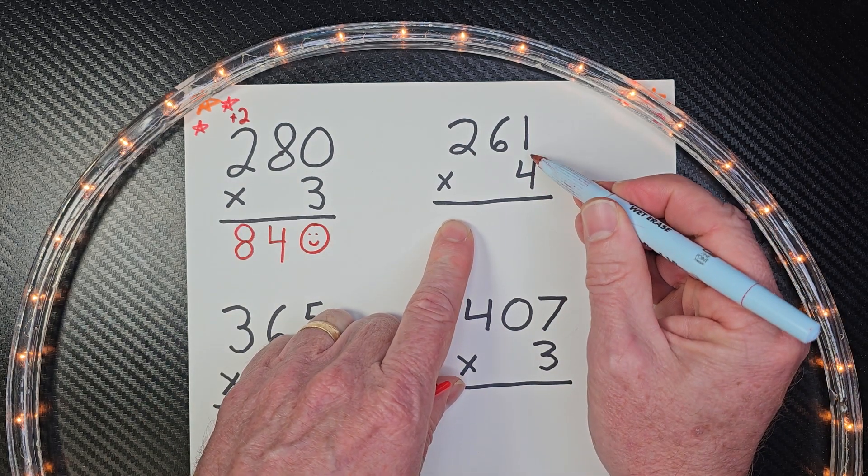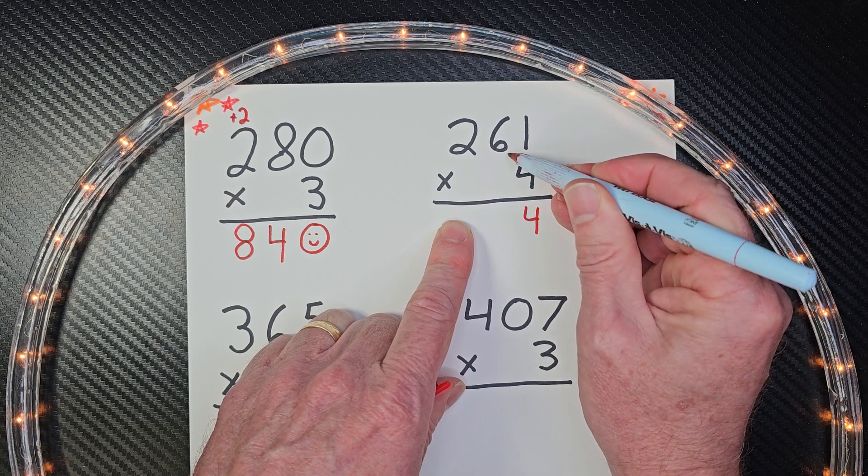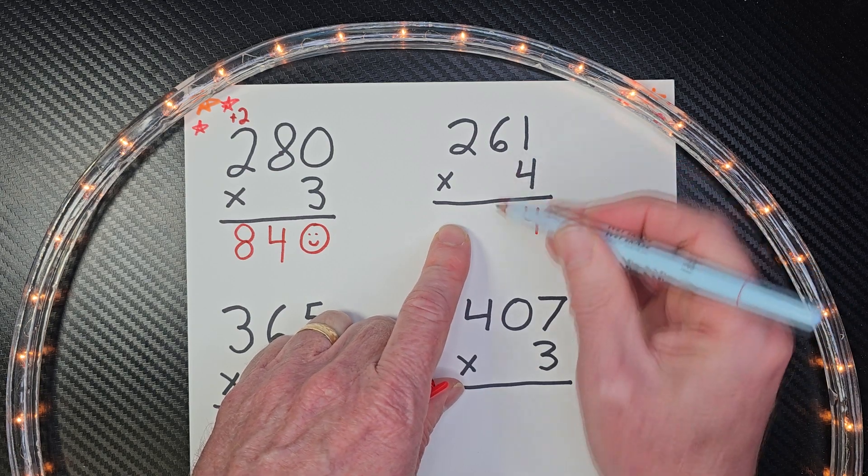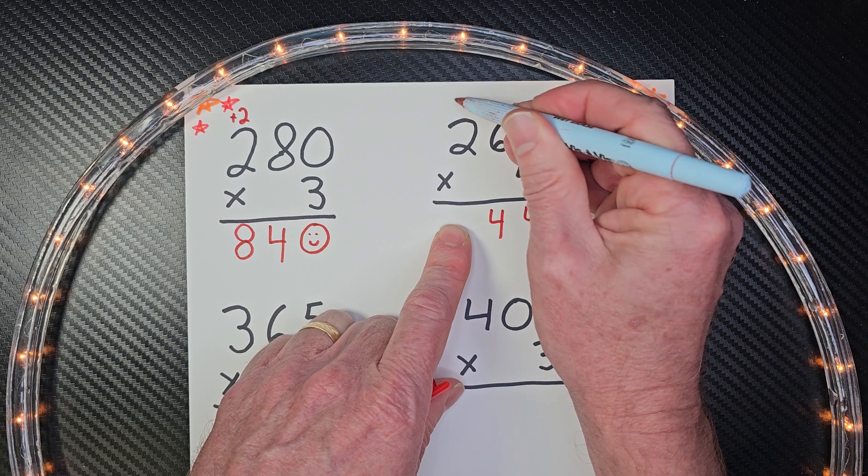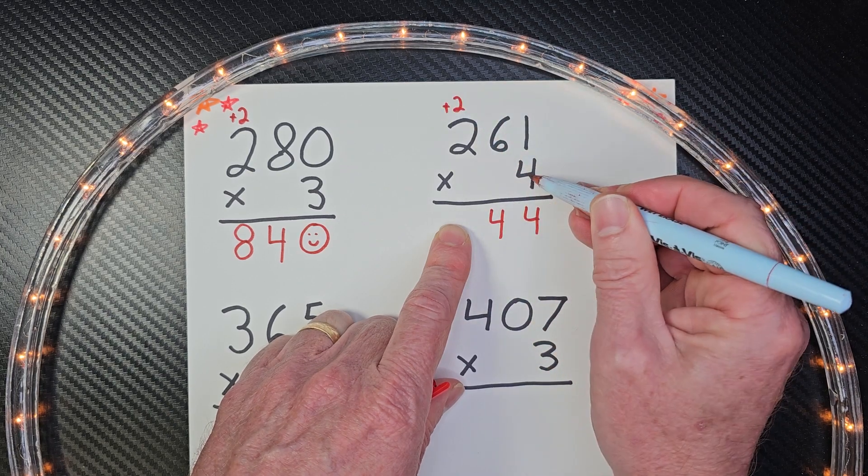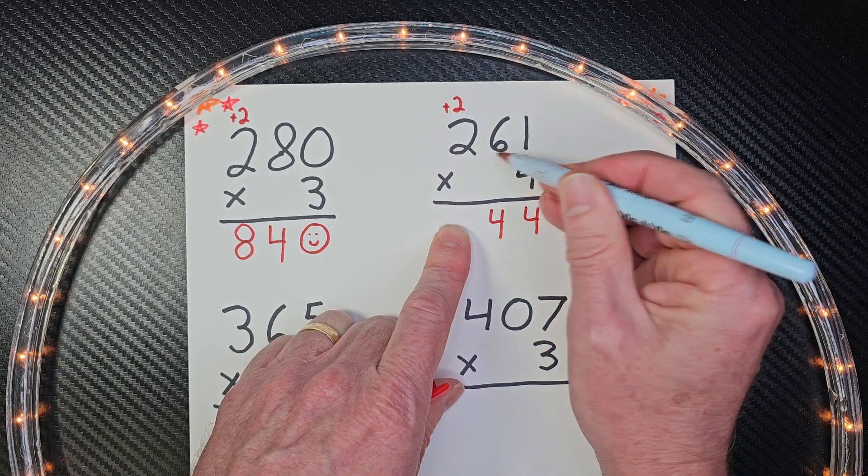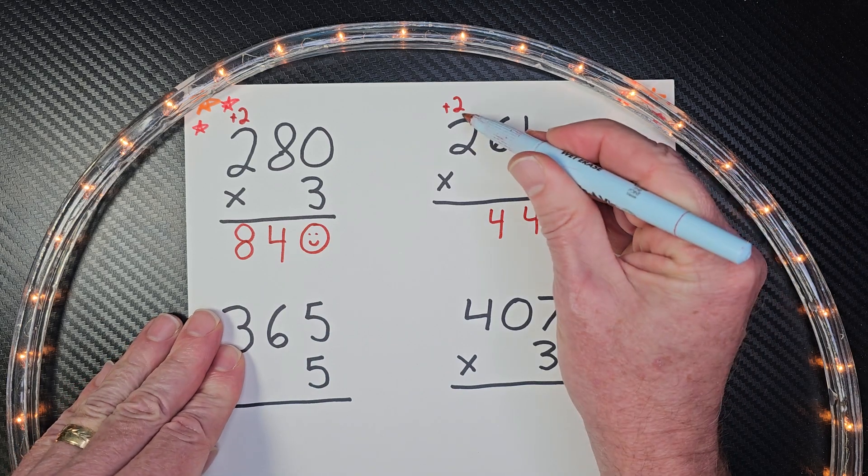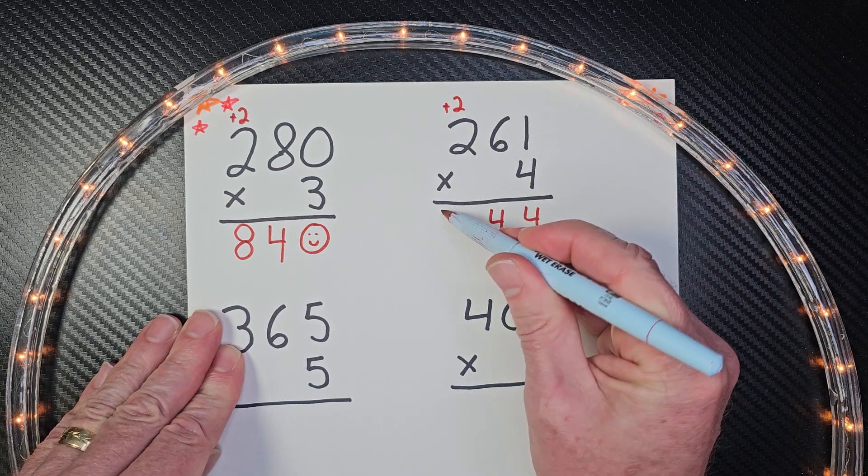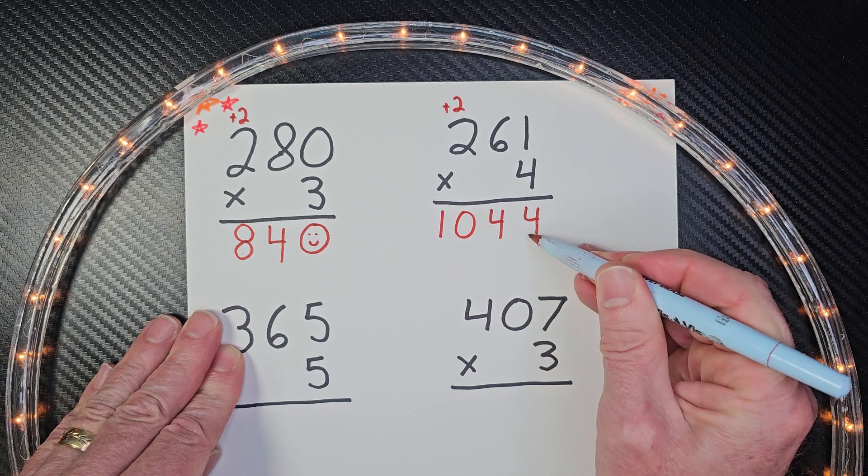Four times one is four. Four times six is 24. So I put the four there, carry the two, got to add that. And then four times two is eight. Don't be late. Eight, eight, and then nine, 10. So our answer is 1044.